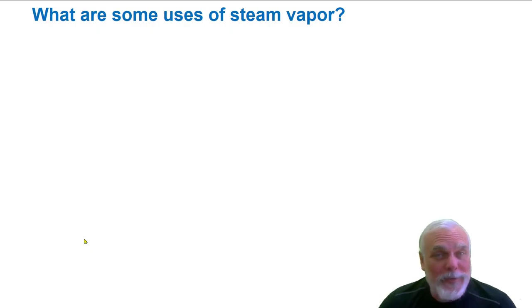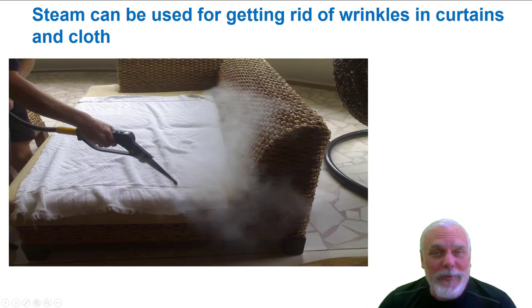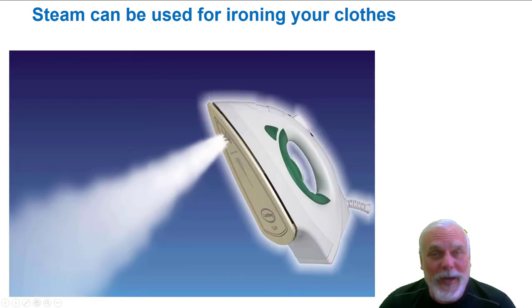Water vapor, steam, what can we use it for? We can use steam for cleaning. Here you see a carpet cleaner using steam. It can be used for getting rid of wrinkles in curtains and cloth. I've seen it being used at department stores where they use the steam to get rid of wrinkles on the clothing as they're hanging on the hangers.